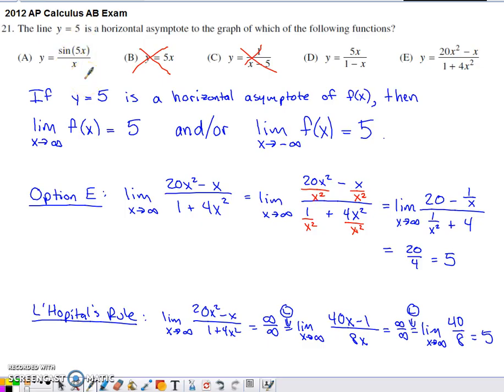The sine function always has a value between negative 1 and 1. So if we have a value between negative 1 and 1 and we divide by infinity, we might have a negative fraction, we might have a positive fraction, but the absolute value of that fraction is going to be really close to 0.